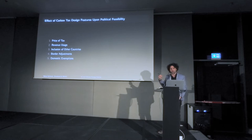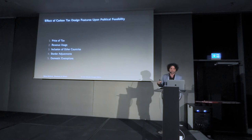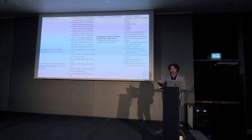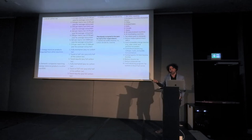We have to think about whether other countries are involved in a global or regional agreement, or whether countries are acting in isolation. We also have to consider how we deal with countries that don't have a carbon tax, since we don't want to be outsourcing our emissions — so border adjustments may be necessary. Finally, for political reasons, we may want to exempt certain domestic firms in order to generate political support. In this paper, we looked at taxes ranging from $10 to $70, various forms of exemptions, types of country involvement, and various uses of revenue.